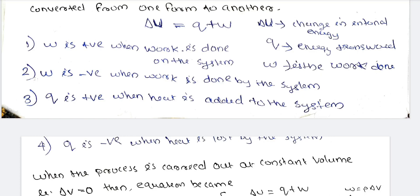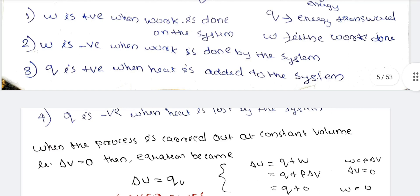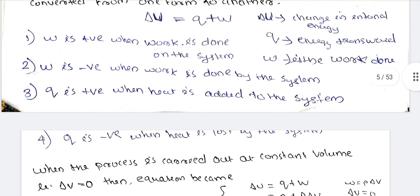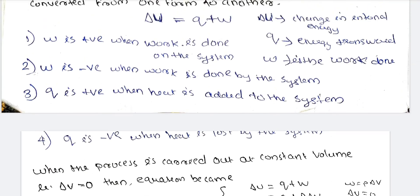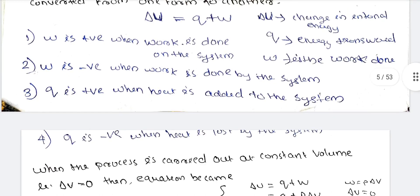Q is negative when heat is lost by the system — that is an exothermic process. Q is positive for an endothermic process.